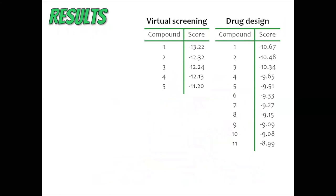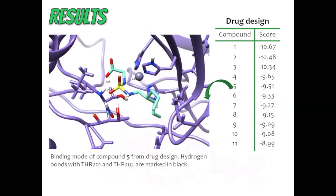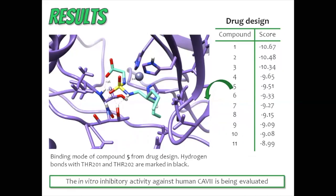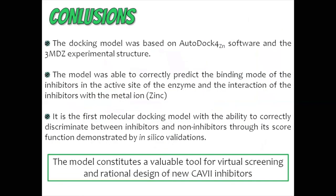Top candidates from virtual screening were commercially purchased and 11 compounds designed were synthesized. Here we can observe the binding mode of compound 5 proposed by drug design. The in vitro inhibitory activity against human CA7 is being evaluated. This result shows that the model constitutes a valuable tool for virtual screening and rational design of new CA7 inhibitors. It is the first molecular docking model with the ability to correctly discriminate between inhibitors and non-inhibitors, demonstrated by enriched cross-validations.